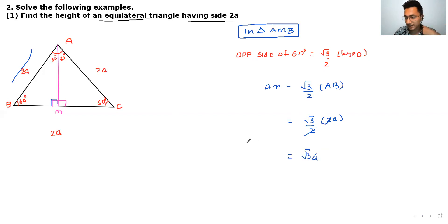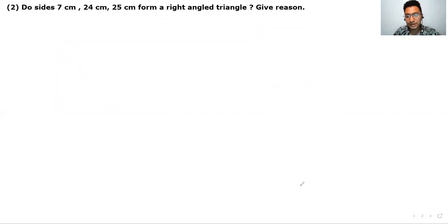Now second question. Second question is quite simple. Is 7, 24 and 25 a right angle triangle, question mark?